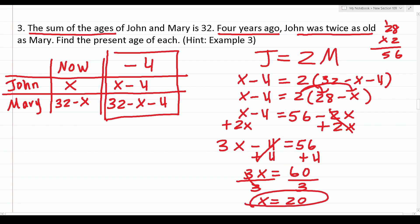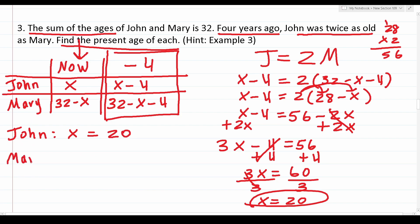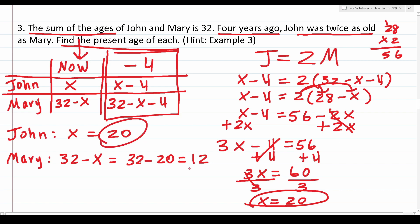Going back to the now column, John's age is x, so John is 20. Mary's age is 32 minus x, which is 32 minus 20 equals 12. John is 20 years old now and Mary is 12 years old now.